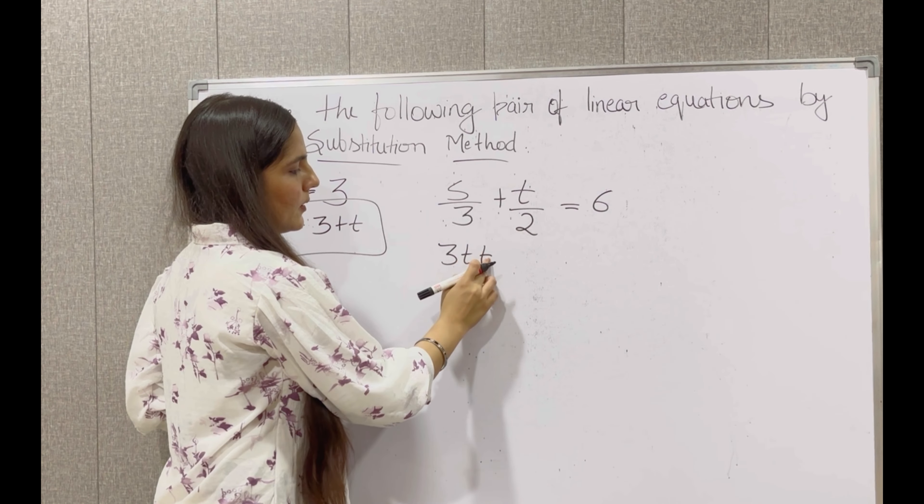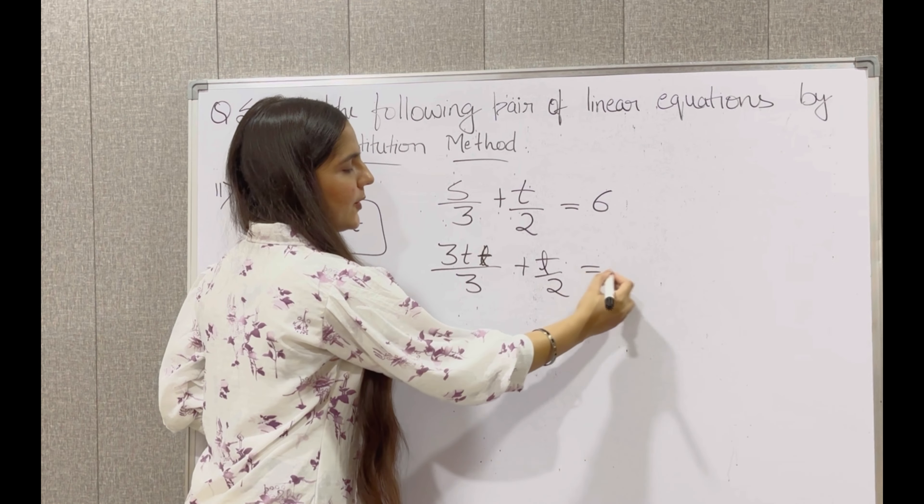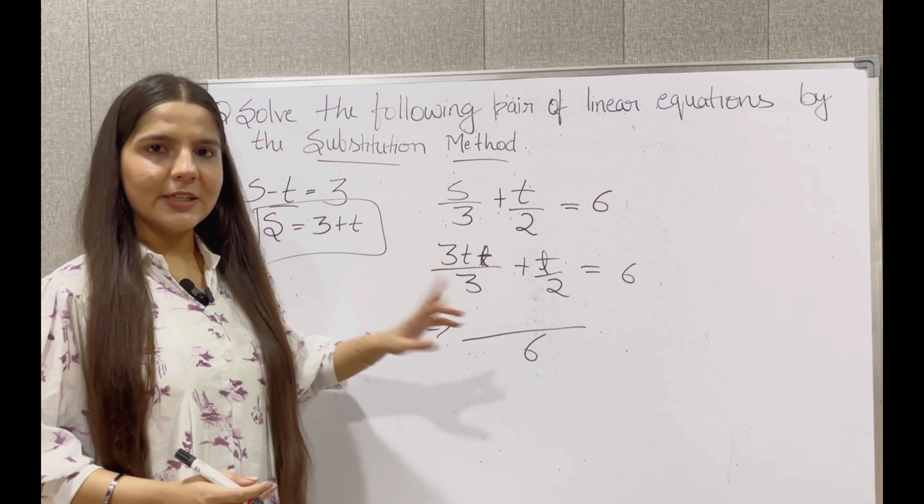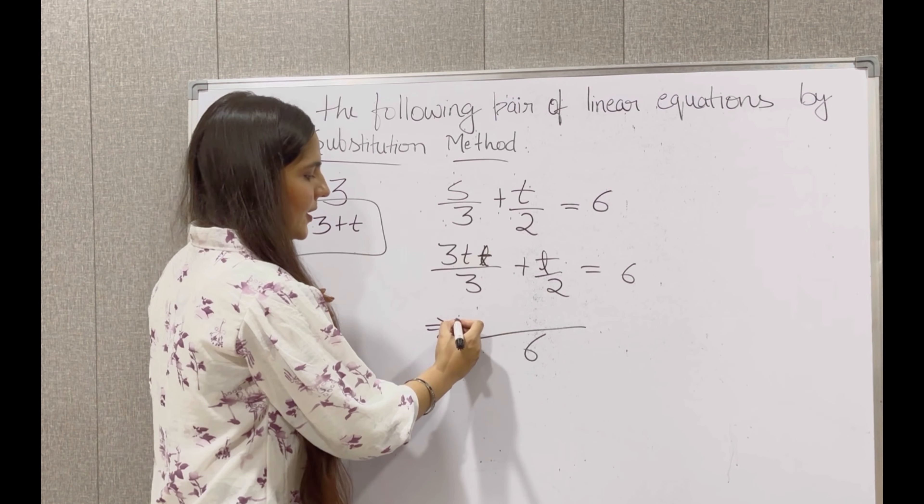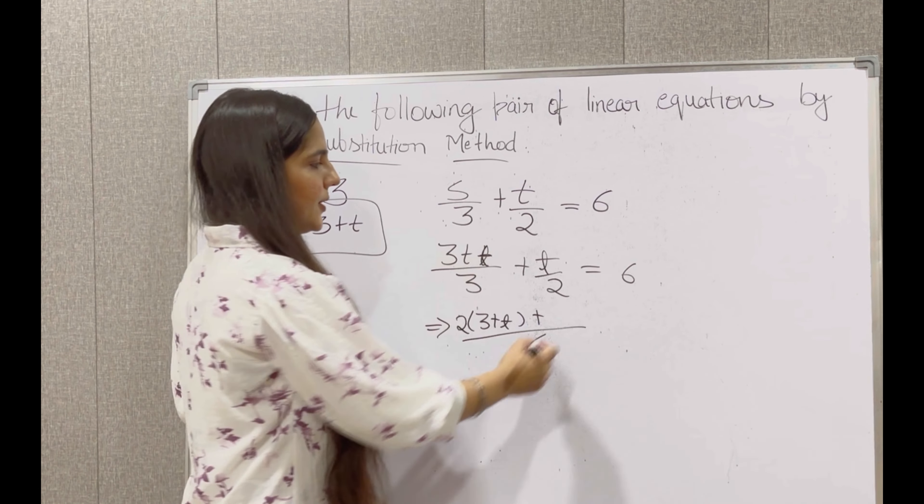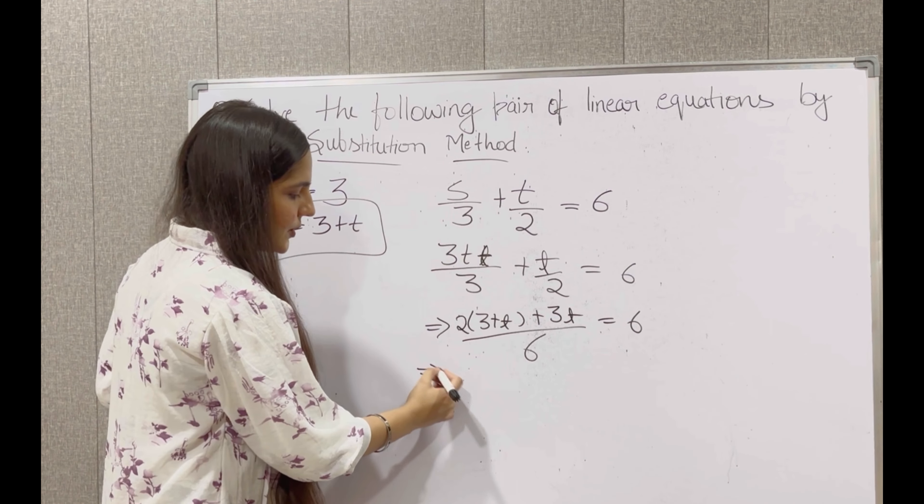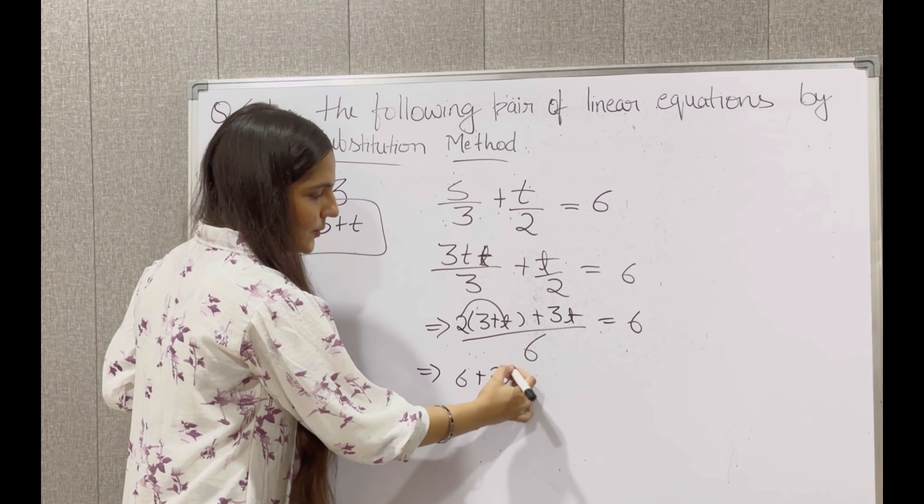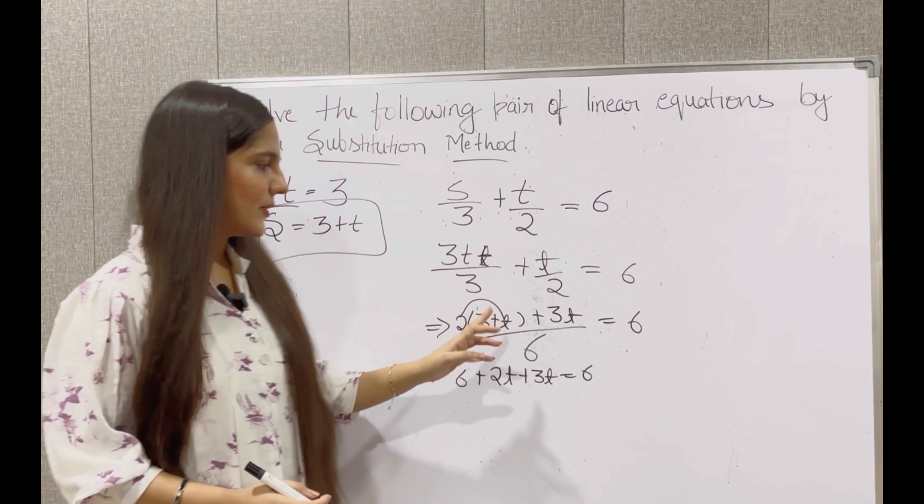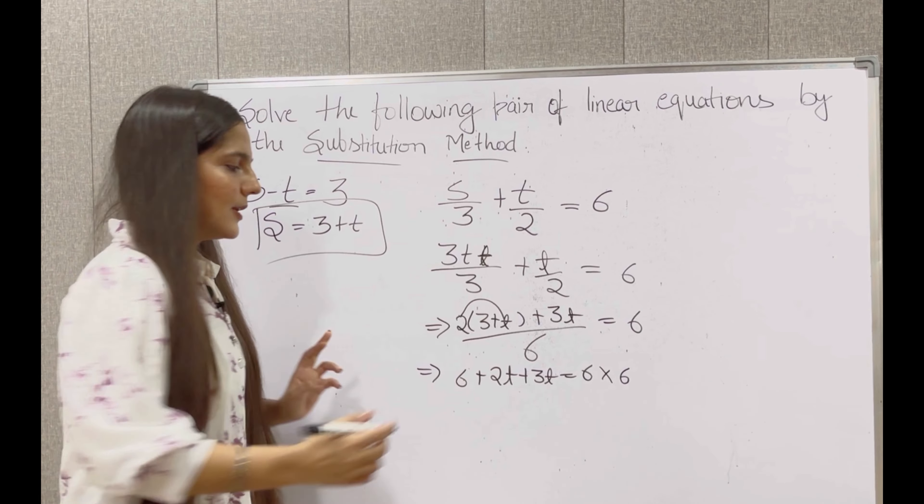So in place of s we will write 3 plus t upon 3, plus t upon 2 is equal to 6. Take LCM, we will get 6. So 6 divided by 3 gives us 2. So multiply the numerator by 2. In bracket, 3 plus t, 6 divided by 2 gives us 3. So 3 into t means 3t is equal to 6. Now 2 multiplied by 3 is 6.